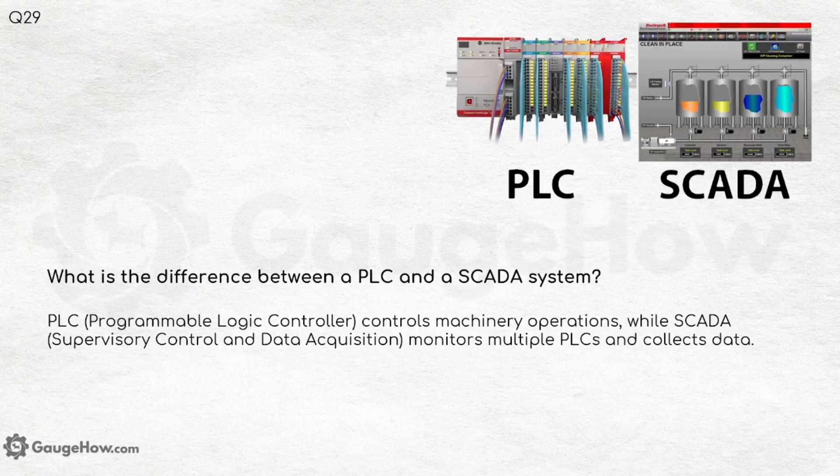What is the difference between a PLC and a SCADA system? PLC — Programmable Logic Controller — controls machinery and operations, while SCADA — Supervisory Control and Data Acquisition — monitors multiple PLCs and collects data.